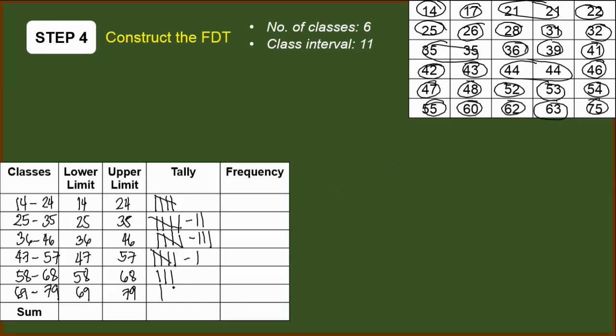Next to accomplish is frequency. For frequency, we will just be counting the tally for each class. So we have here 5, then we have 7, here is 8, 6, 3, and 1. Next, we have to identify the sum. We have to add all of this. We have 5 plus 7 plus 8 plus 6 plus 3 plus 1. That is 30. And this sum should match the number of data that we have in the set. So in this case, we have 30 as the sum and 30 as the number of observations in our set.